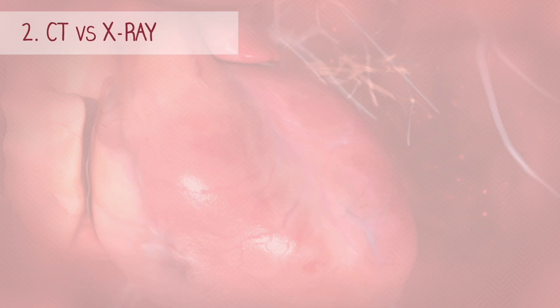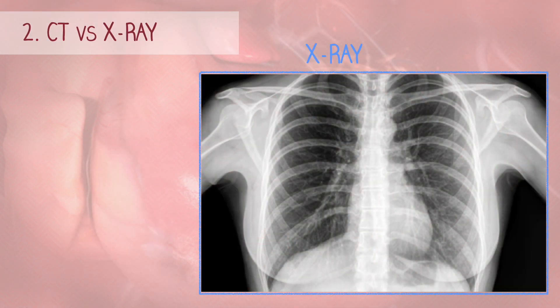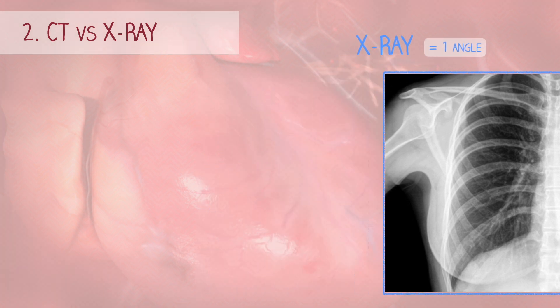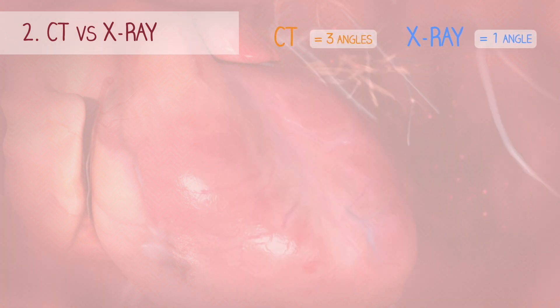CT scans use X-rays, just like traditional X-ray imaging. But while X-ray imaging provides images from a single perspective, CT scans offer a better view by capturing images from multiple angles.